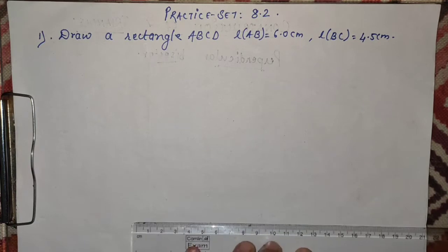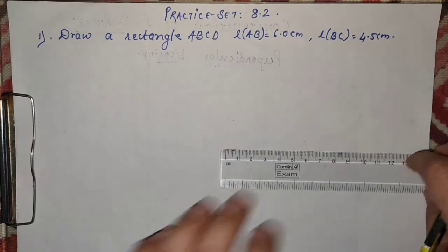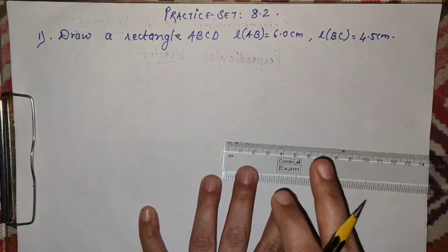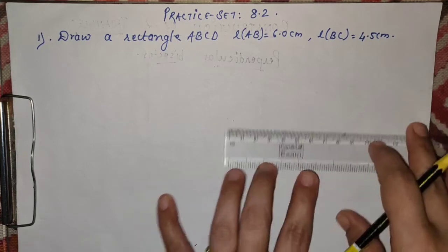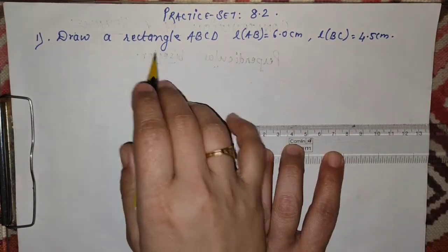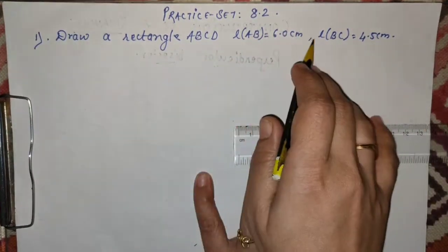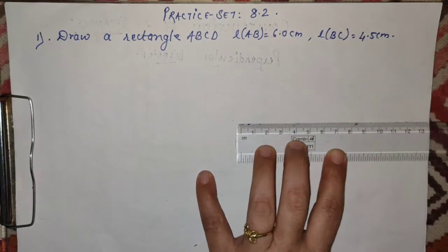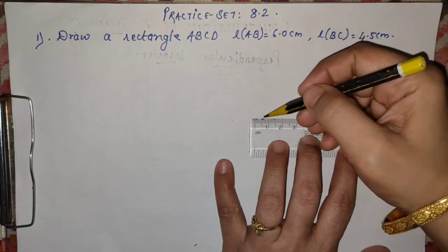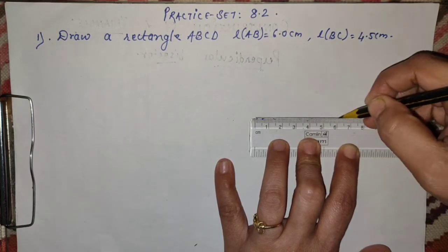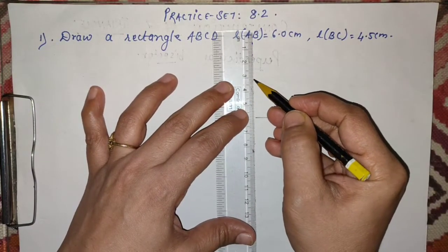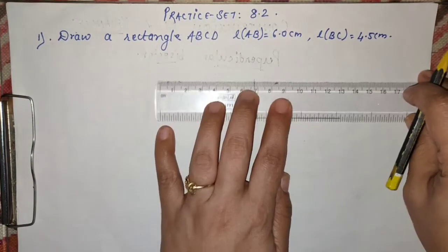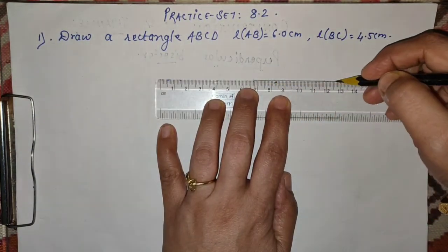So जब तक आपको rectangle की property नहीं मालूम होगी आप solve नहीं कर सकते। Teacher की बात को follow करो और properties याद करो — तभी आपको easy जाएगा। अगर आपने वह वाला वीडियो नहीं देखा होगा तो पहले उस वीडियो को perfect करो और फिर इस वीडियो को देखना। Is that clear? Now let us begin.